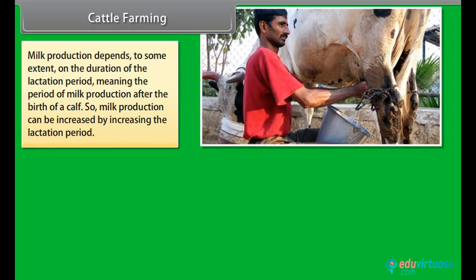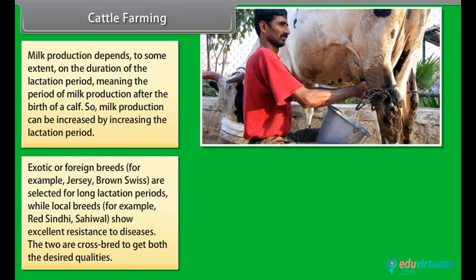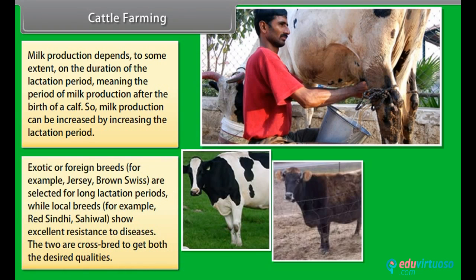Milk production depends to some extent on the duration of the lactation period, meaning the period of milk production after the birth of a calf. So milk production can be increased by increasing the lactation period. Exotic or foreign breeds — for example, Jersey and Brown Swiss — are selected for long lactation periods.